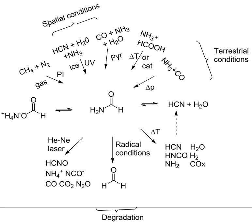Formamide-based prebiotic chemistry refers to ongoing scientific efforts aimed at reconstructing the beginnings of life on our planet, assuming that formamide could accumulate in sufficiently high amounts to serve as the building block and reaction medium for the synthesis of the first biogenic molecules. Formamide, the simplest naturally occurring amide, contains all the elements — hydrogen, carbon, oxygen, and nitrogen — which are required for the synthesis of biomolecules, and is a ubiquitous molecule in the universe.